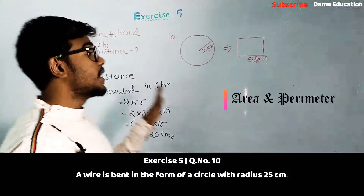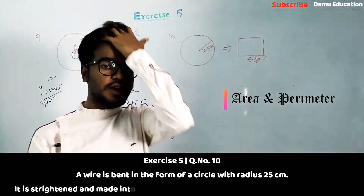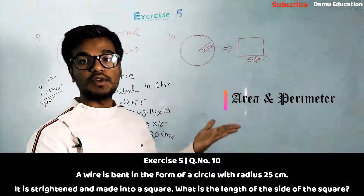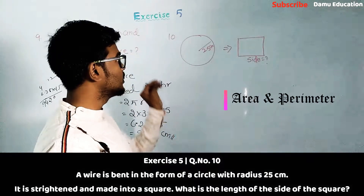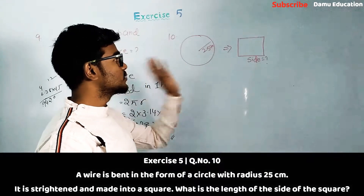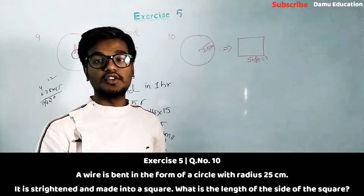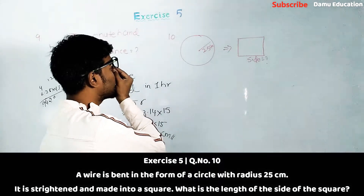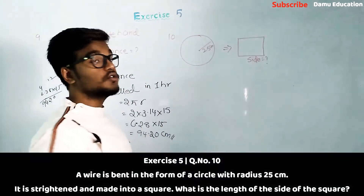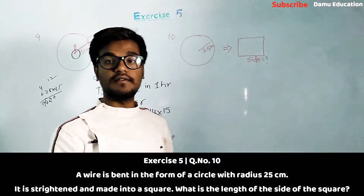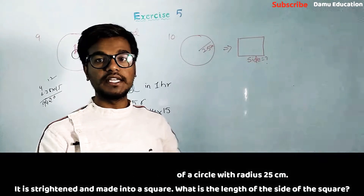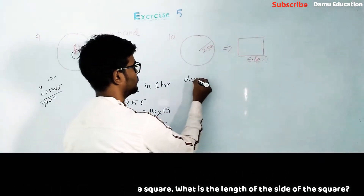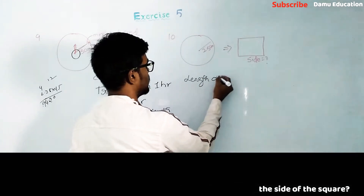Now for the 10th question: a wire is bent into a circular shape with radius 25 centimeters. That circle is then converted into a square shape, and we are asked to find the side of the square. We can use the radius to find the length of the wire, since the wire is only converted into a square.